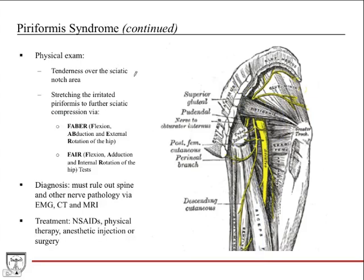On physical exam, you can have tenderness over the sciatic notch area where the piriformis is located. Stretching the irritated piriformis can further sciatic compression, which is assessed with two tests. The FABER test involves flexion, abduction, and external rotation of the hip simultaneously to further compression on the sciatic nerve by stretching the piriformis. The FAIR test flexes the hip and adducts and internally rotates it, which can also exacerbate the pain.